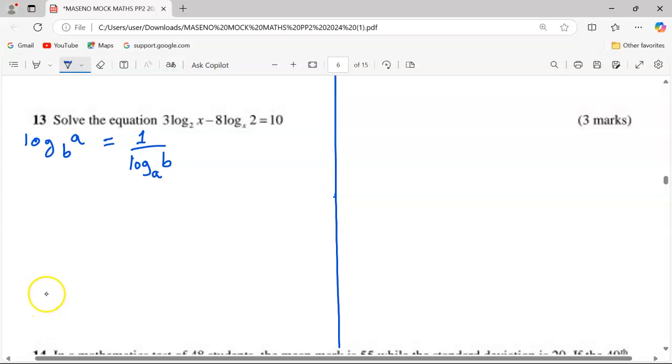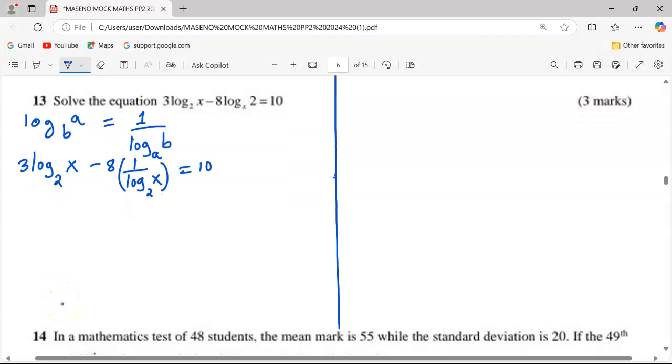By that we will have 3 log₂(x) minus 8 multiplied by, instead of what I'm having there, I can take the reciprocal, then I have it becoming log₂(x). This is equivalent to 10. So I've changed the base according to that law.